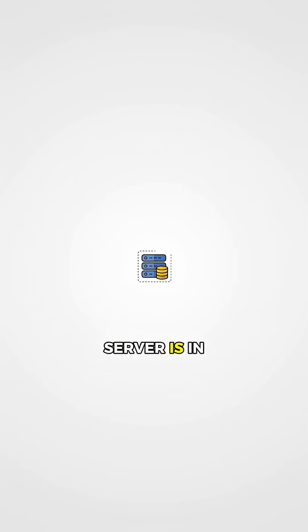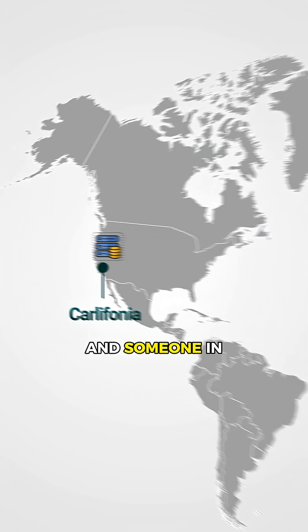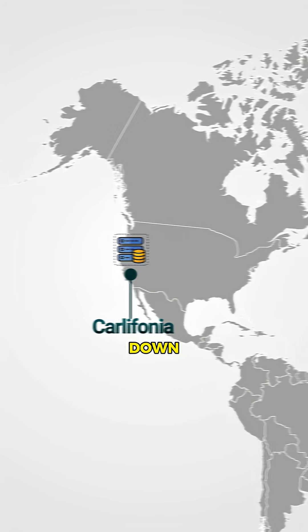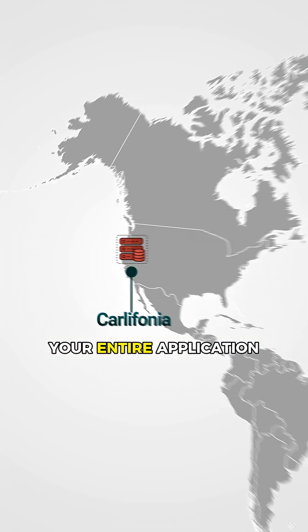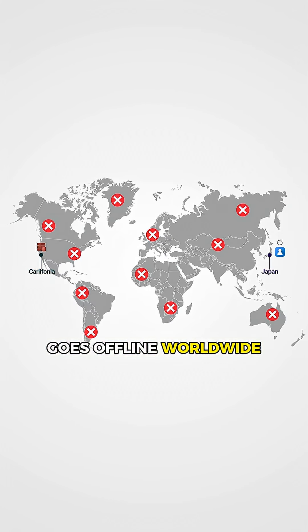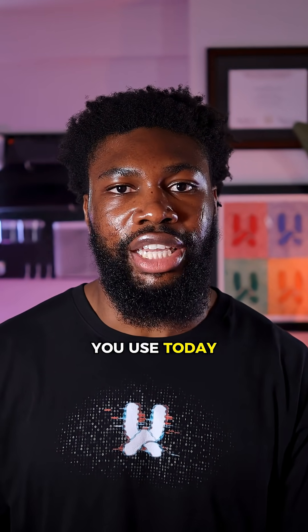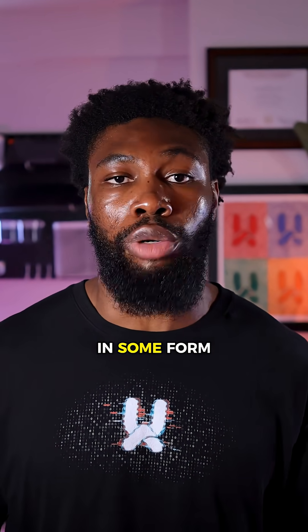Monolithic systems don't scale globally. If your single server is in California and someone in Japan tries to use your app, they'll experience terrible loading times. Plus, if that one server goes down, your entire application goes offline worldwide. This is why almost every major application you use today is distributed in some form.